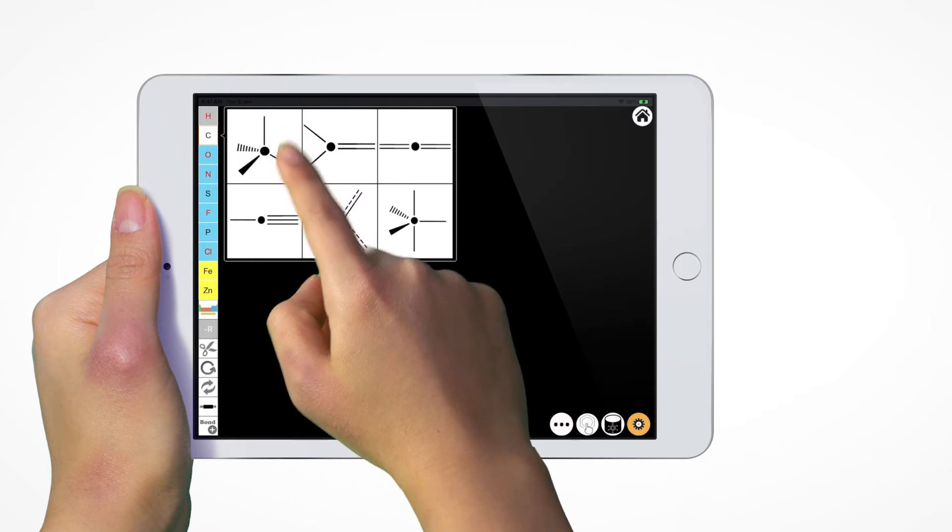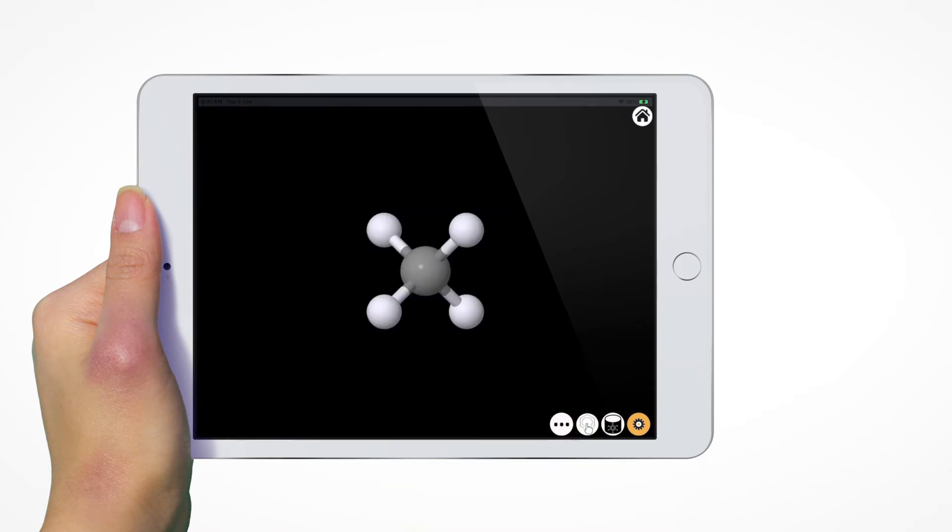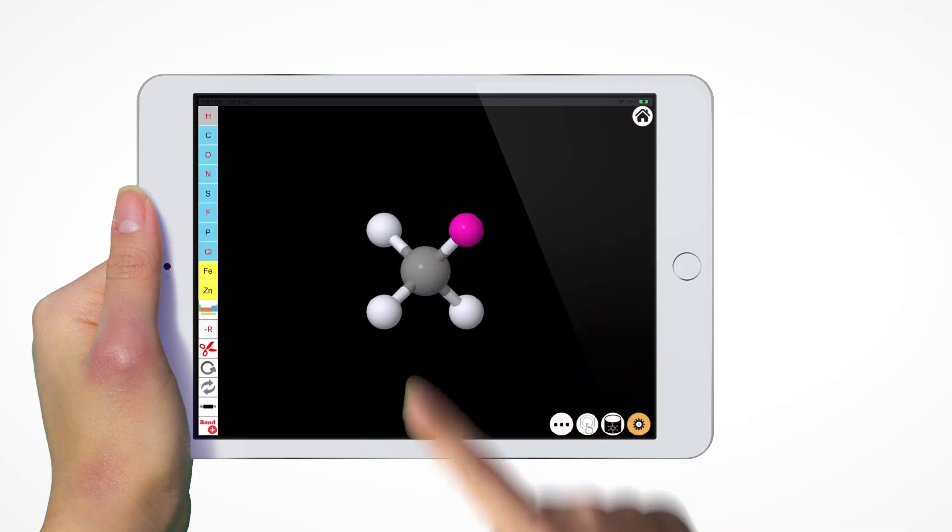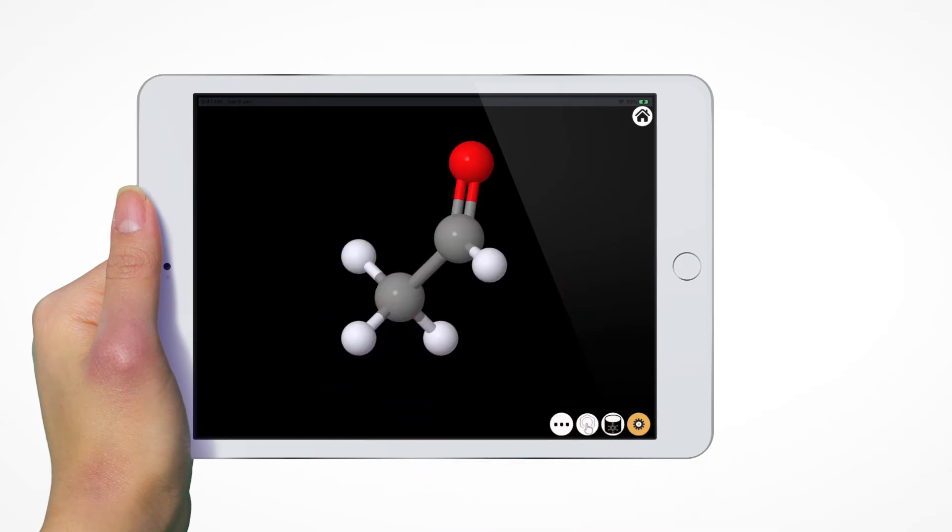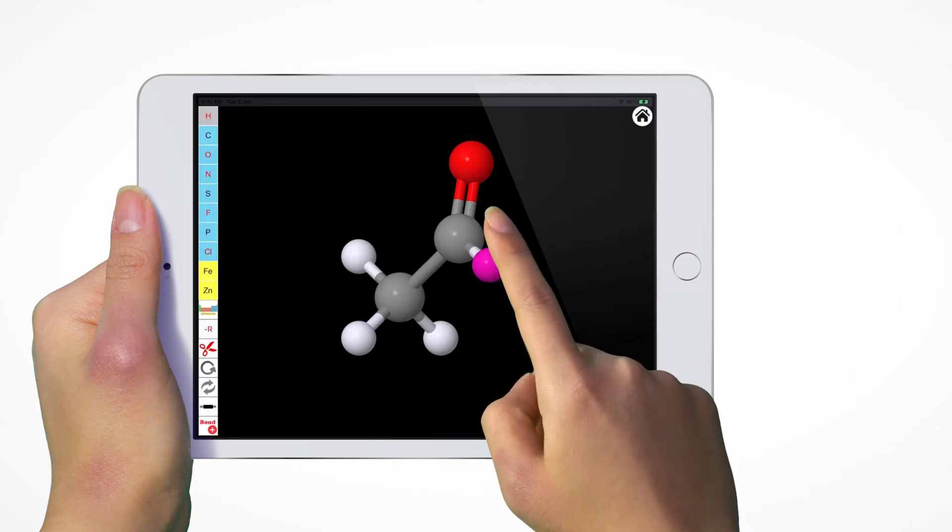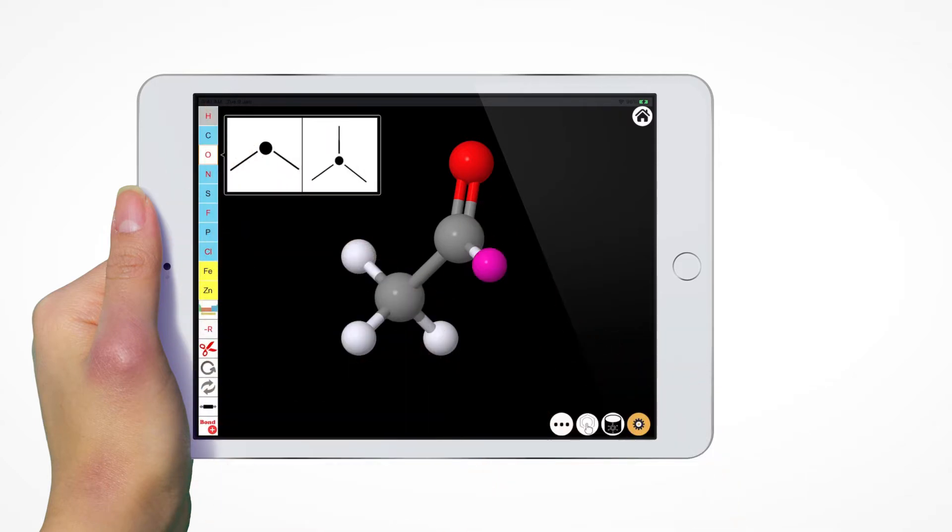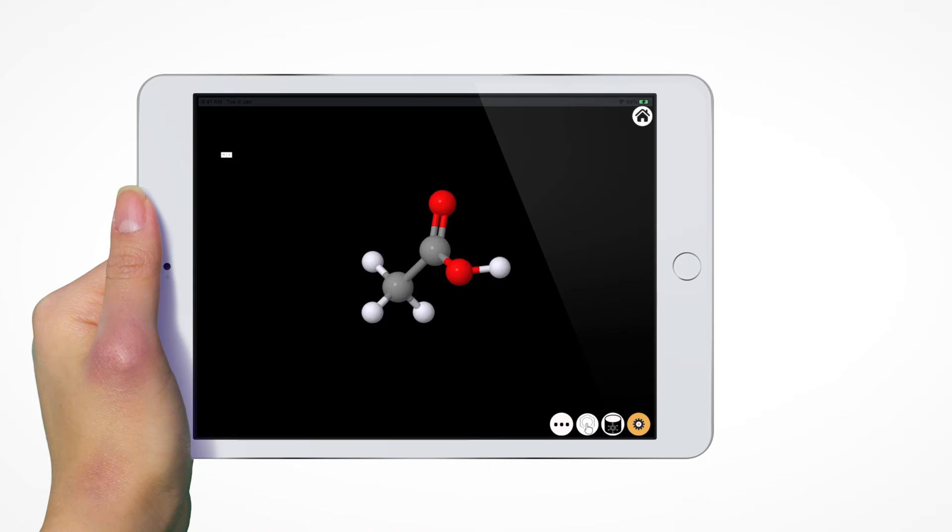In order to use MoCubed you first need to create a molecule of interest. For simple molecules you can build it one atom at a time like using a molecular builder toolkit with balls and sticks. For example, you can build an acetic acid molecule with a few taps.